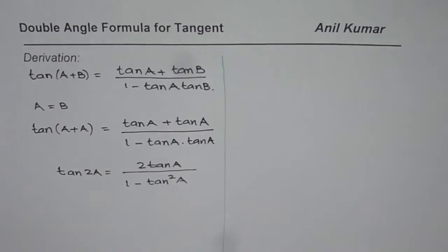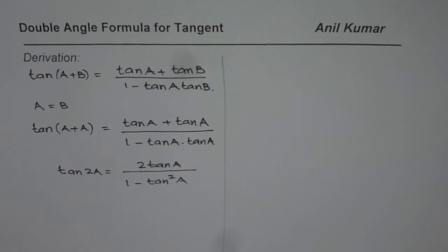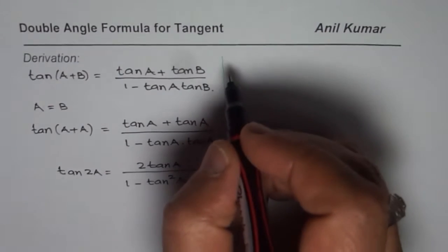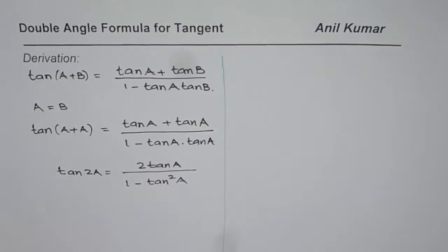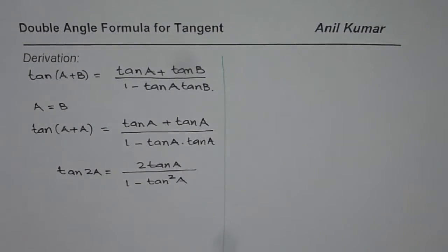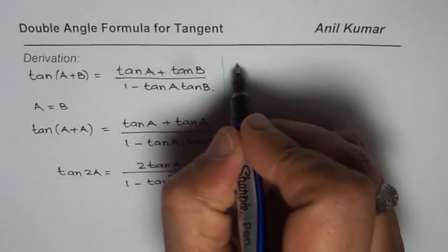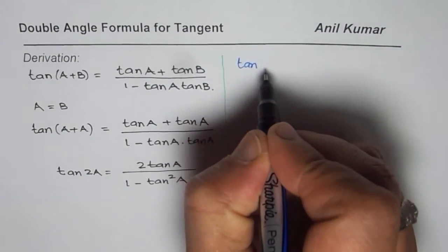The other method is to derive it from the double angle formulas of sin and cosine. Let me show you that also. Let's say we want what tan(2A) is equal to.